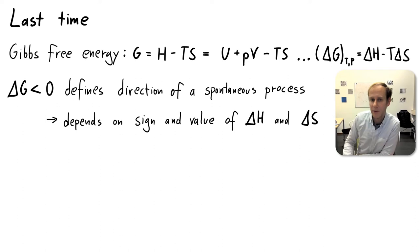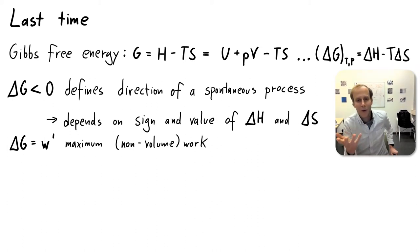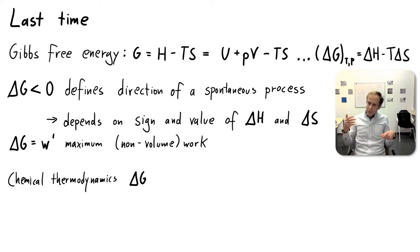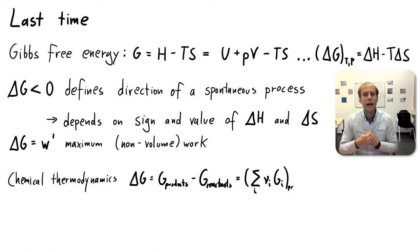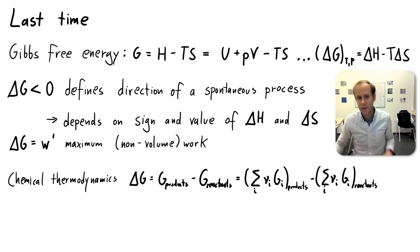That's what I mean when it depends on the sign and value of delta H and delta S. Delta G has a second important meaning: it tells you the maximum amount of non-volume work that a system can perform, and we will talk a little more about this today. Furthermore, we introduced last week chemical thermodynamics. For chemical reactions, you can define a Gibbs free energy change, which is simply the Gibbs free energy of the products minus the Gibbs free energy of the reactants.